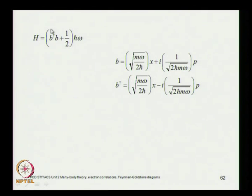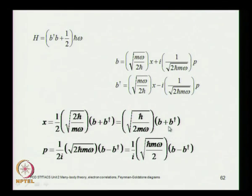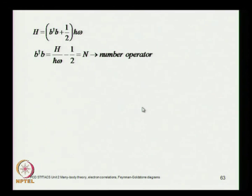These are the main results: the Hamiltonian, and the destruction and creation operators in terms of the fundamental position and momentum operators. Adding and subtracting these results and taking care of coefficients, we can write x and p in terms of b and b-dagger: x in terms of (b + b-dagger) and p in terms of (b - b-dagger), each weighted by appropriate coefficients. The number operator is b-dagger·b, since it gives eigenvalues (n + 1/2)·h-bar·omega.